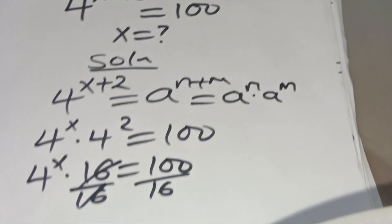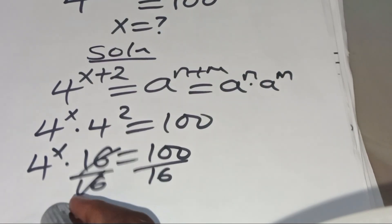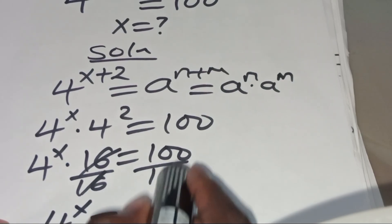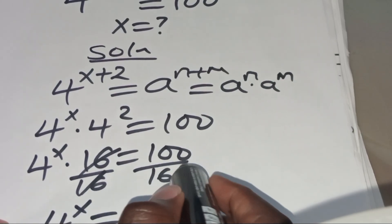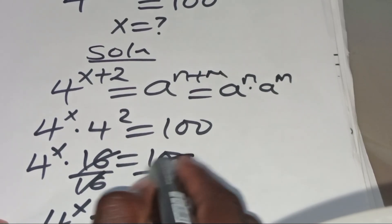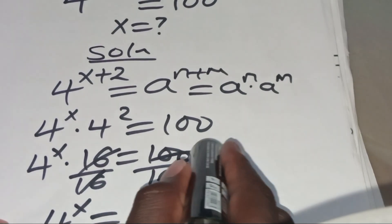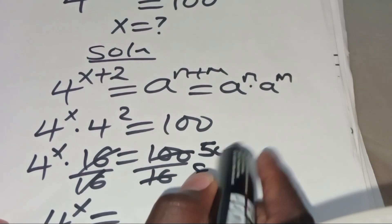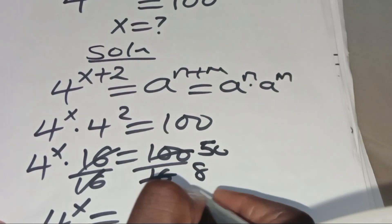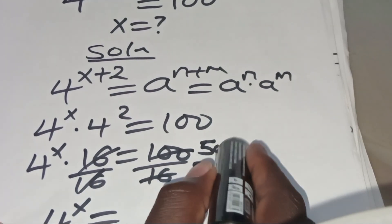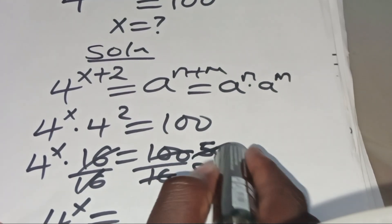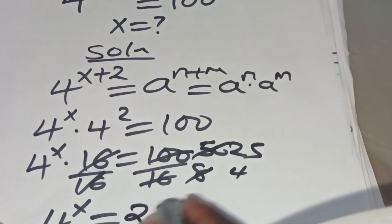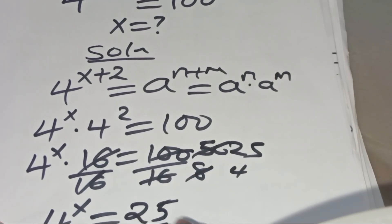So from what we have here, 4 to the power 2 is equal to 16, so we have 4 to the power x multiplied by 16, equal to 100. We divide both sides by 16, so that 4 to the power x equals 100 divided by 16, which simplifies to 25 divided by 4.